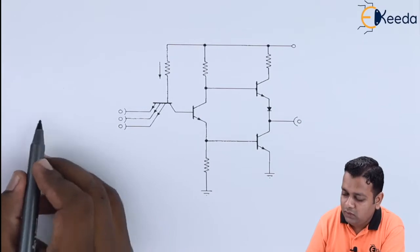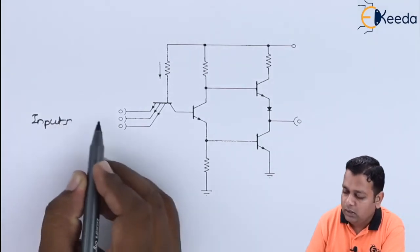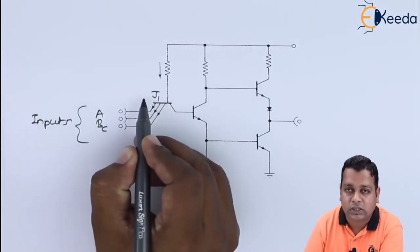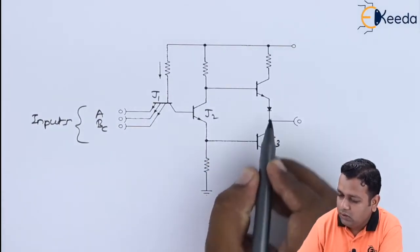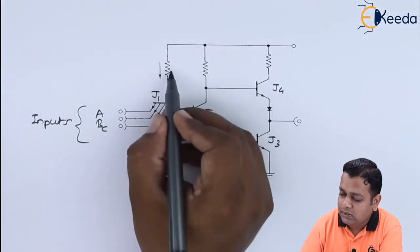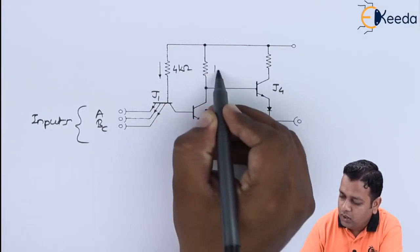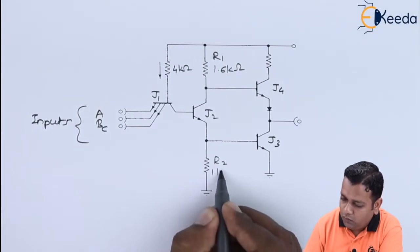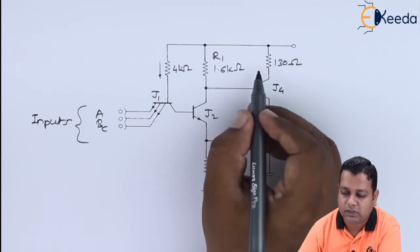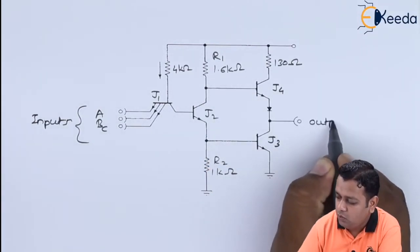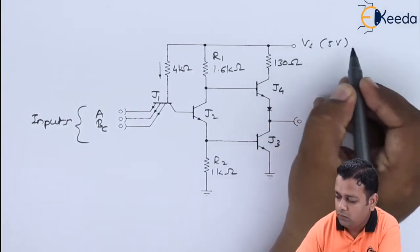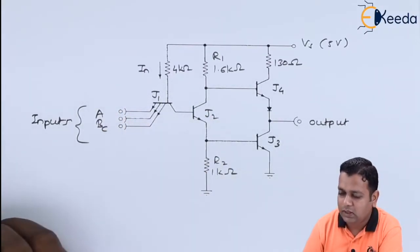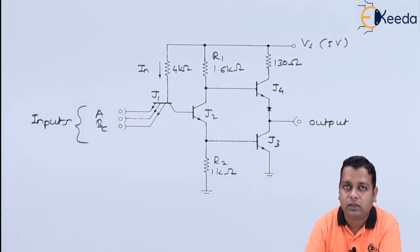In this circuitry, inputs are provided from one side, denoted as capital A, capital B, and capital C. The input is provided to transistor J1, which is further connected to J2. We also have J3 and J4 in this circuitry. The resistance values are 4 kilo-ohms, 1.6 kilo-ohms for R1, 1 kilo-ohm for R2, and 130 ohms for another resistor. The output is obtained with a supply voltage Vs of 5 volts. Two grounded points are present and the current flow is represented as I sub xn. This is the discrete circuit — the first type of electronic circuitry.